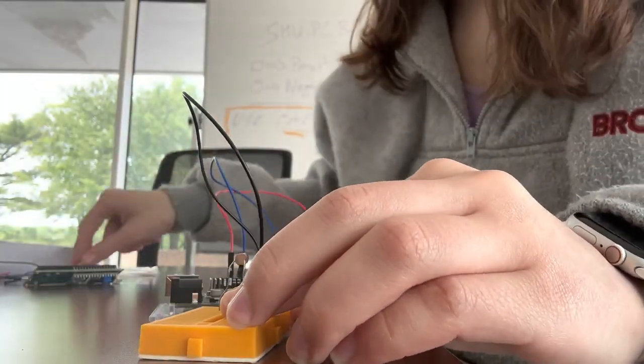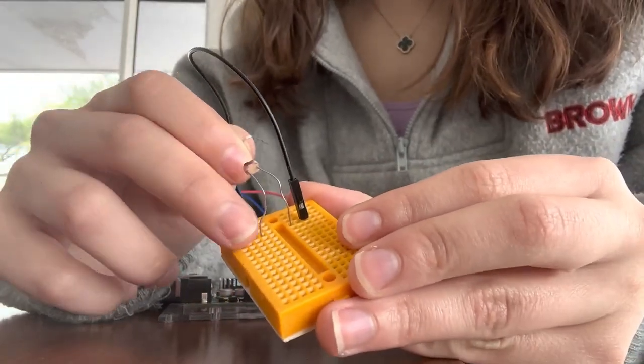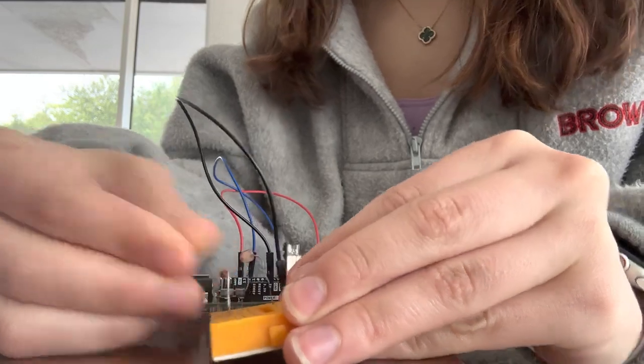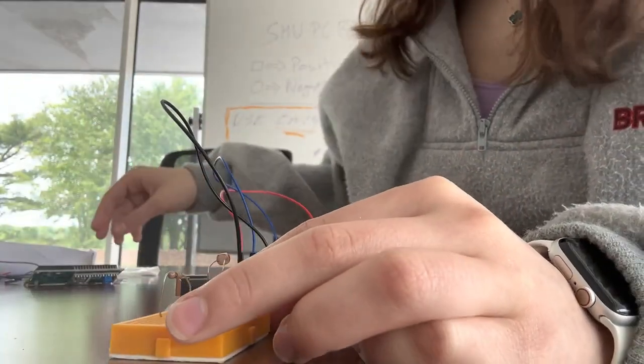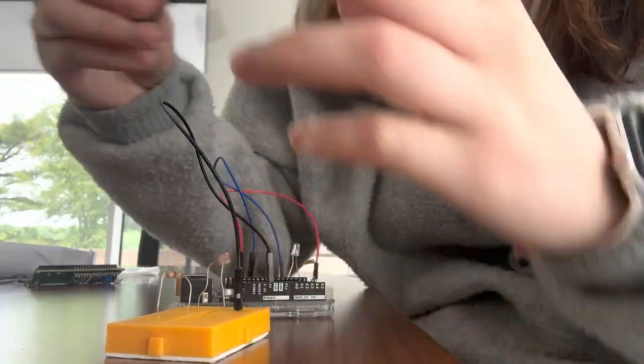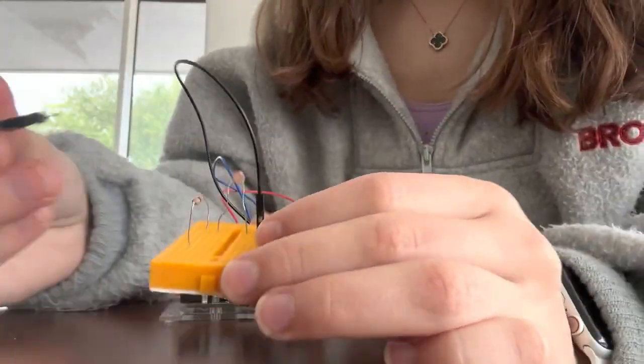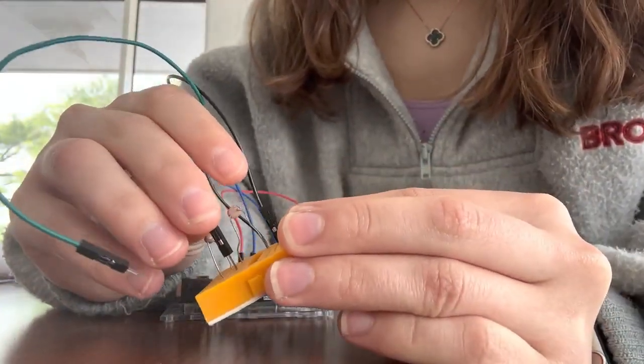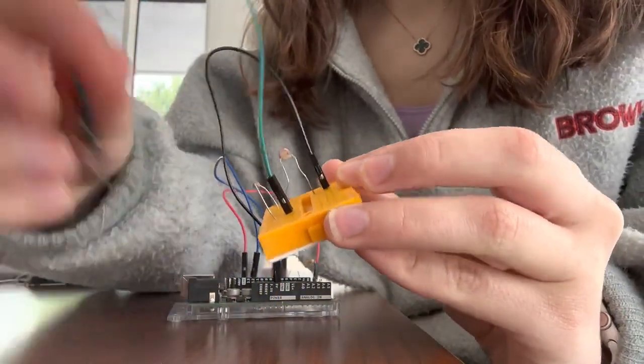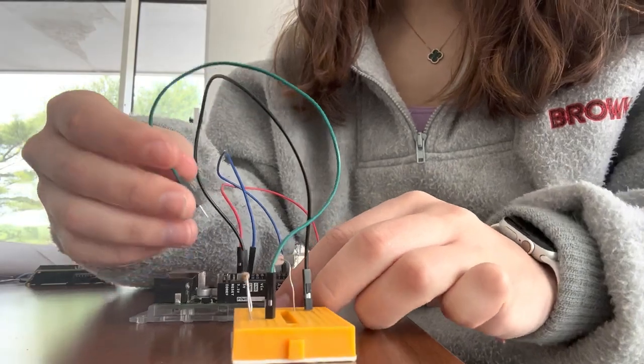Now connect your resistor to the same line as your photoresistor here. The other end, once again, anywhere else. Now, same with the sender. We're going to connect a wire to the same line as the resistor that's not with the photoresistor and the other end to ground.